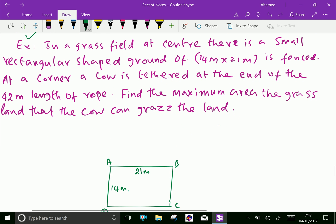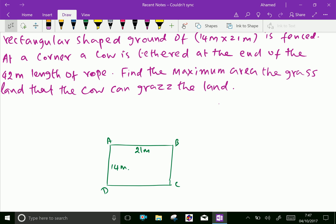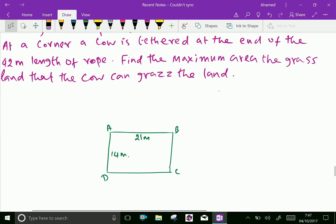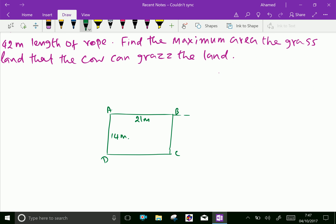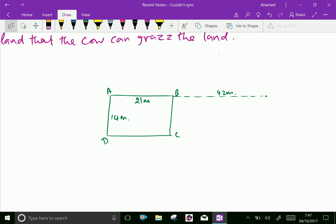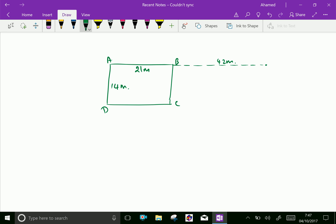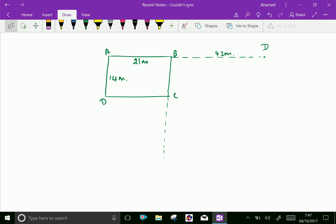A cow is tethered, suppose at the corner B, with 42m length of the rope. Suppose from here, it is 42m. So, also from here, from B to D is also 42m. This is a sector of circle.